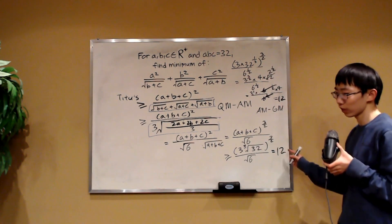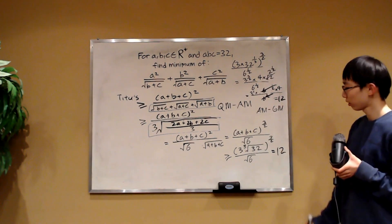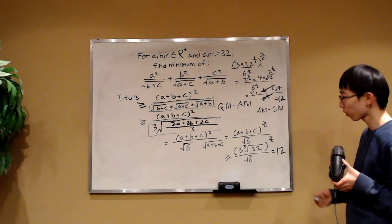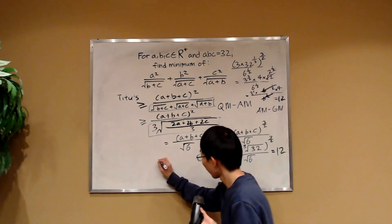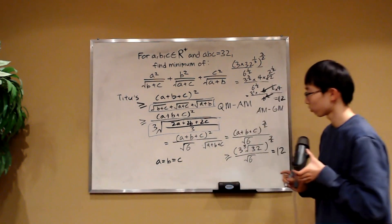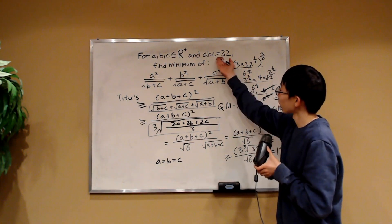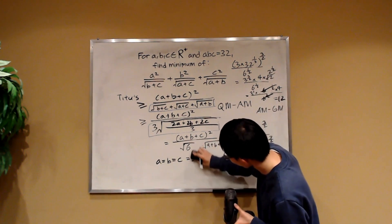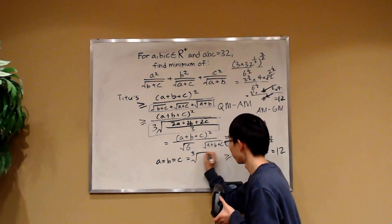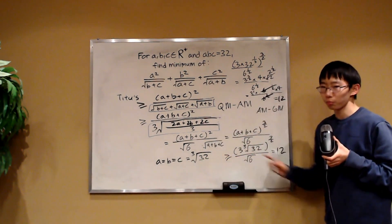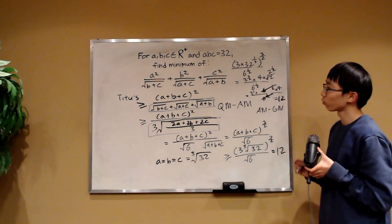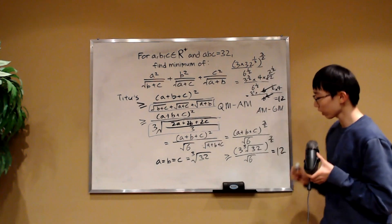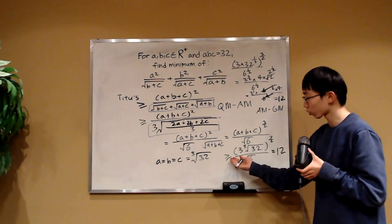Now we have to prove this minimum of 12 is achievable. By the AM-GM equality condition, since we applied AM-GM on A+B+C, equality requires A equals B equals C. Substituting back, each must equal the cube root of 32. You can plug A = B = C = cube root of 32 into the original expression and verify it equals 12. And we proved the expression is always greater or equal to 12, so 12 is indeed the minimum.